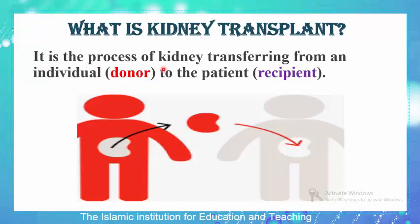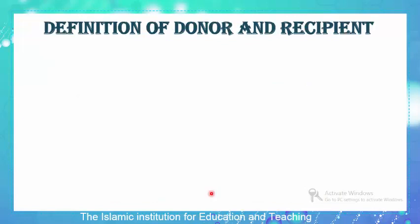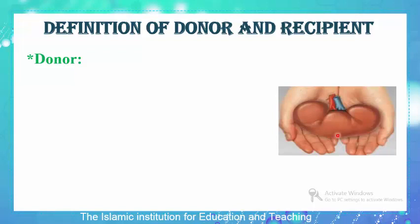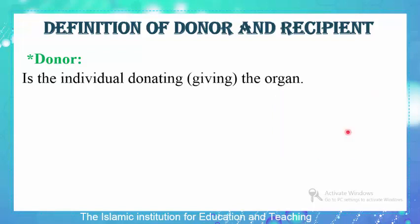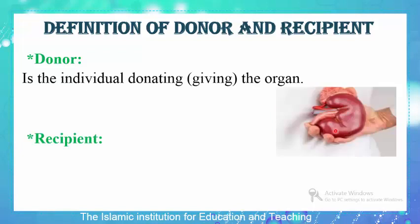Kidney transplant is the process of transferring a kidney from one individual to the patient — the one who needs the kidney. The individual responsible for giving or donating the kidney we name the donor, and the one who is receiving the kidney we name the recipient. So in a kidney transplant we need a donor who is giving the kidney and a recipient who is receiving the kidney.